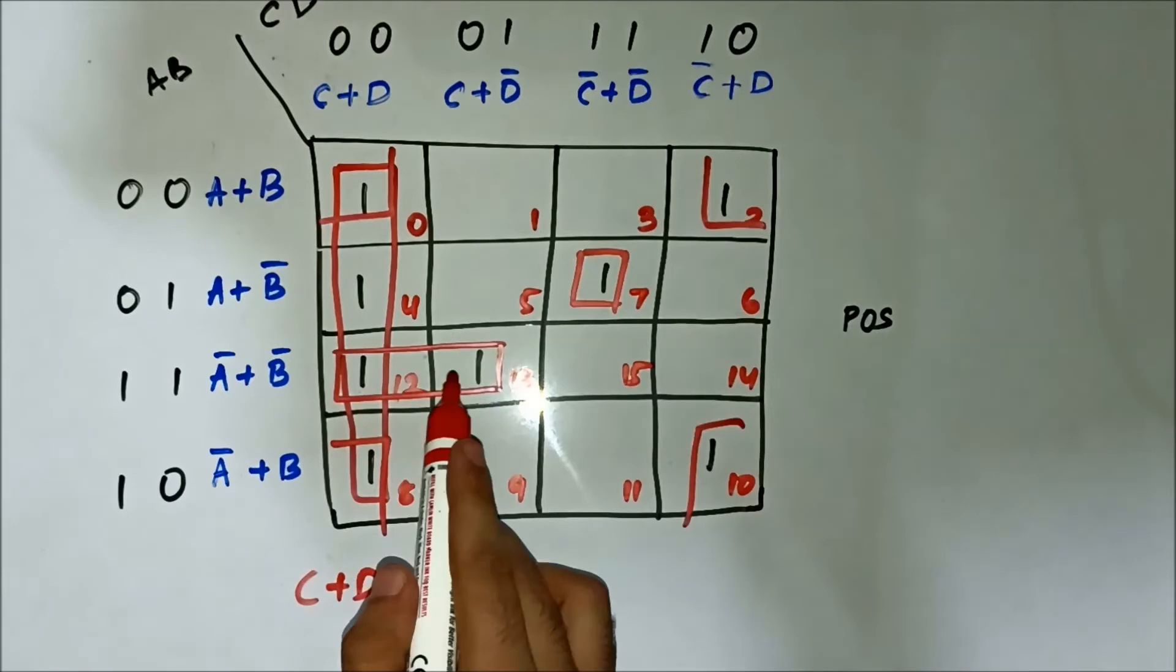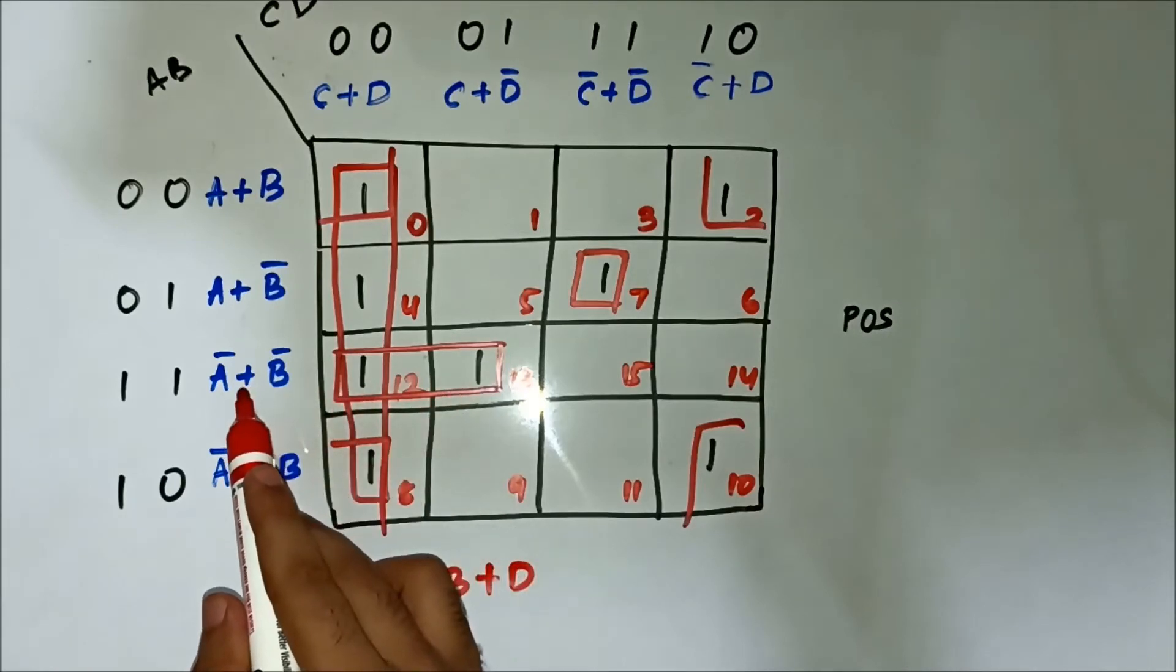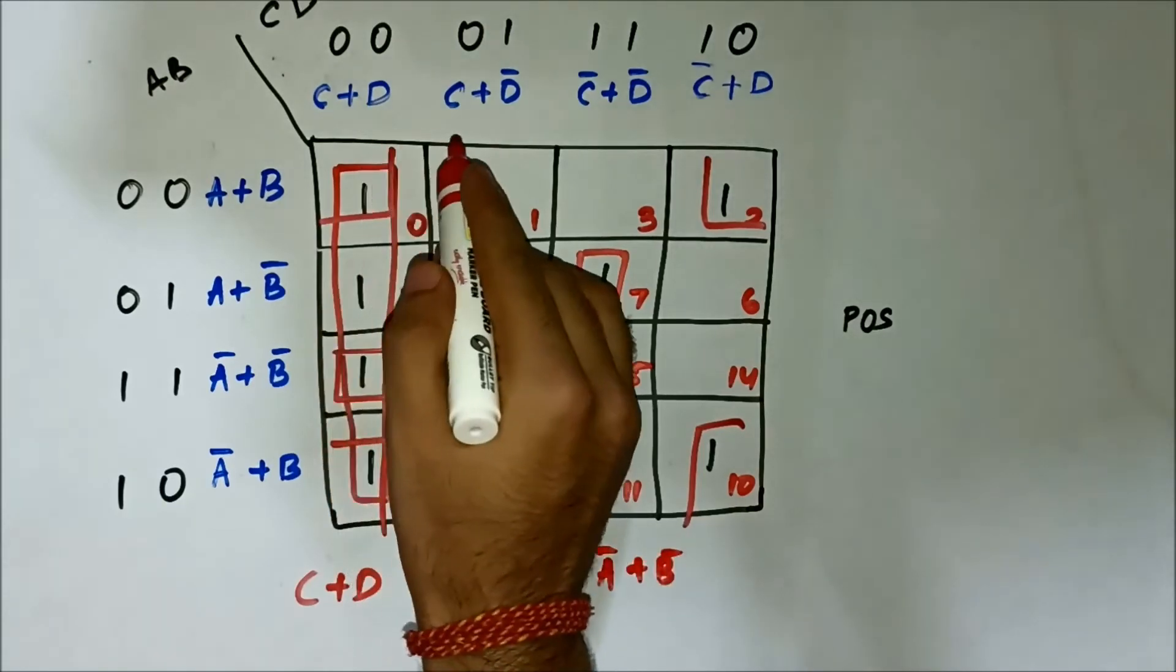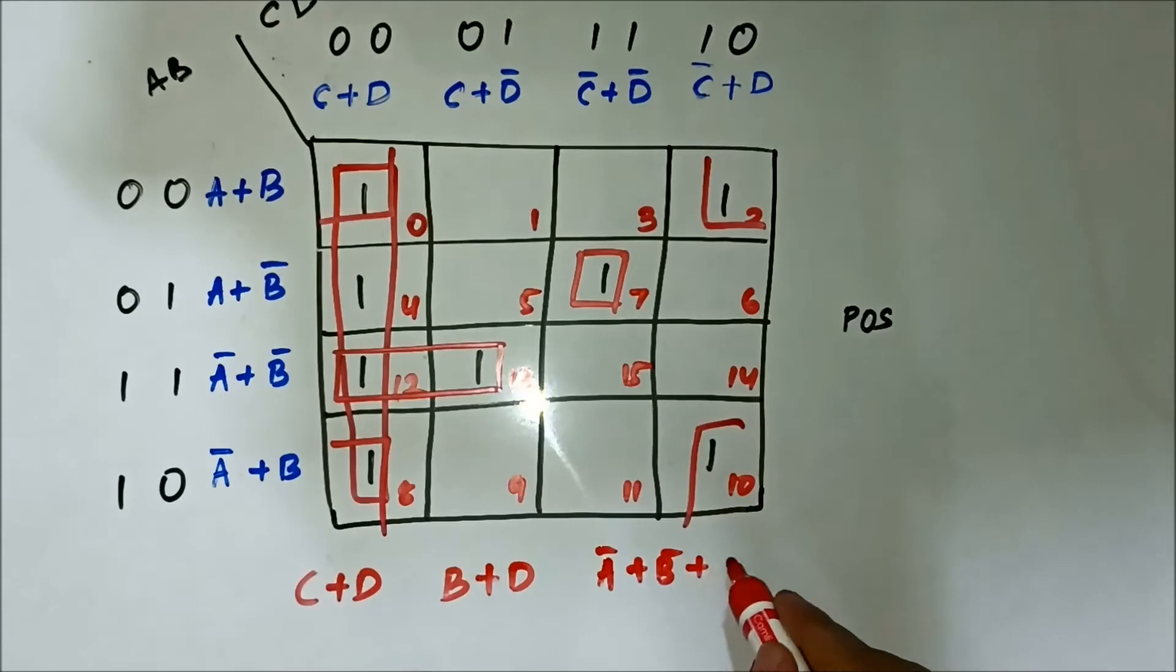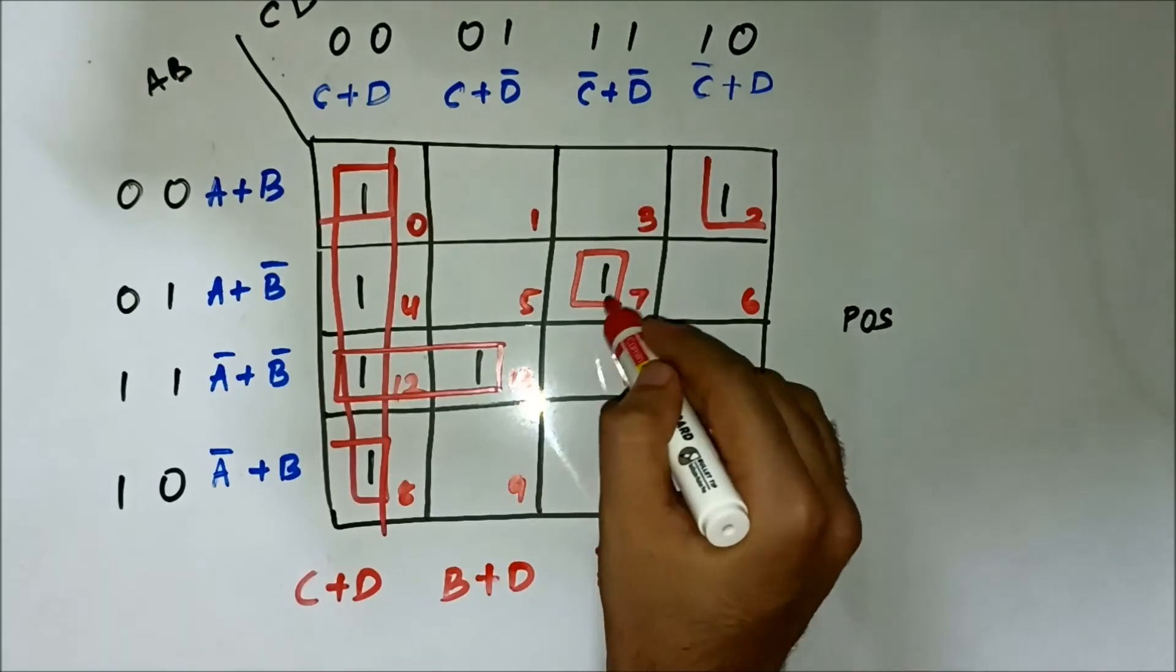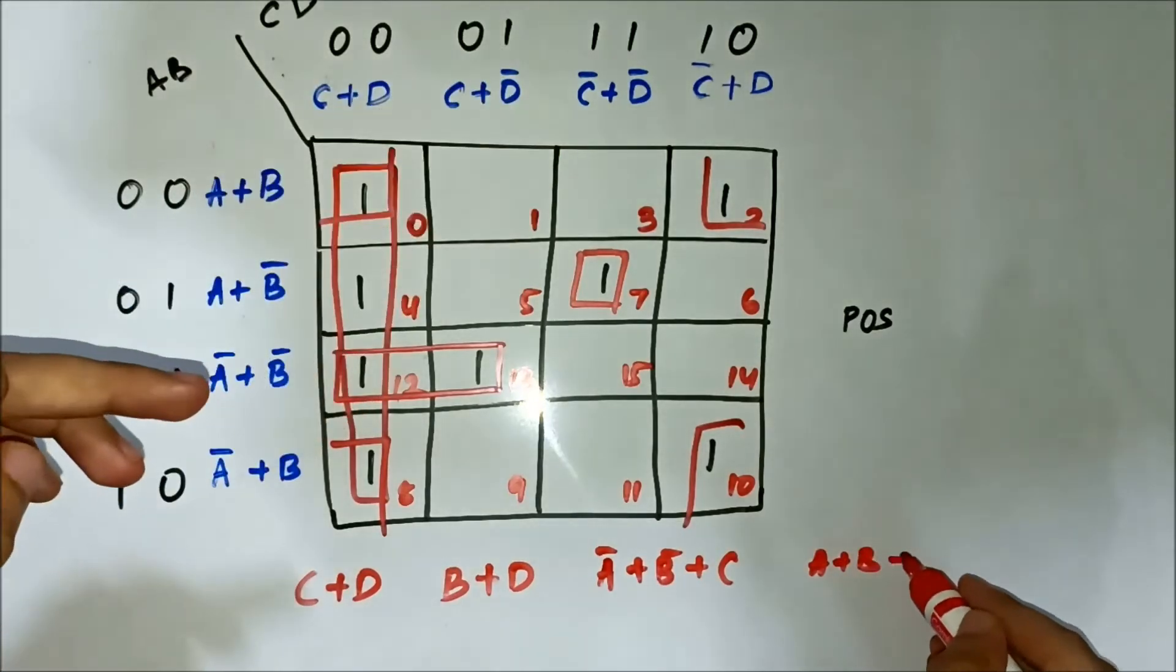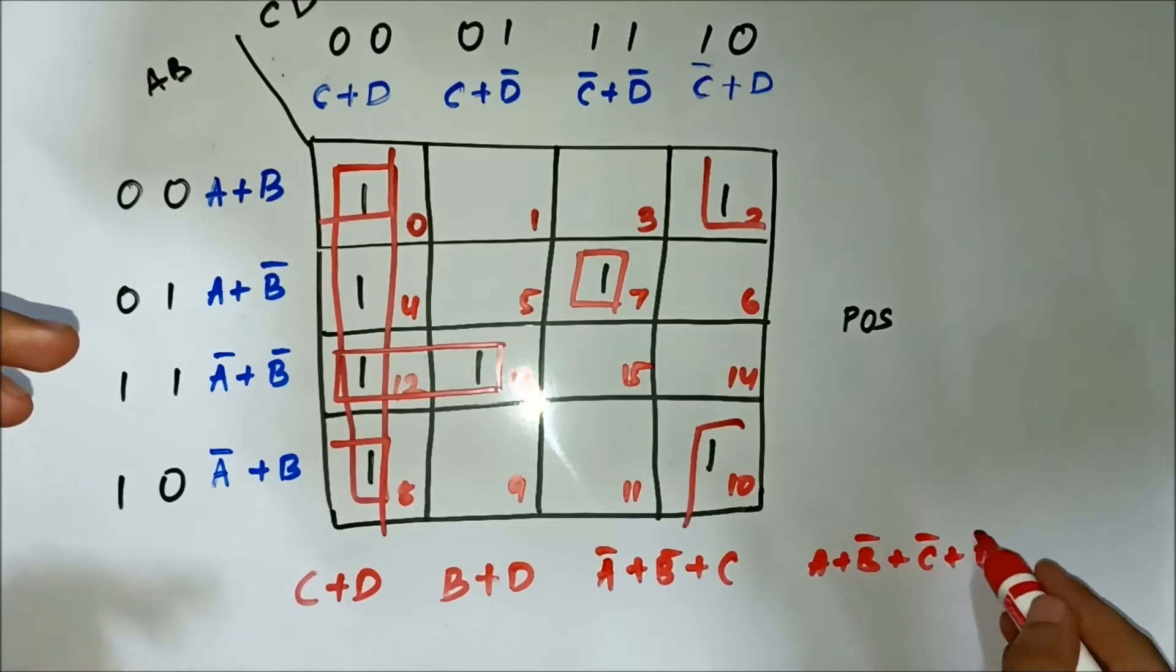Then for this pair, here in the horizontal side, A bar plus B bar. In the vertical side, we have C common. And then for this single cell group, it is A plus B bar plus C bar plus D bar.